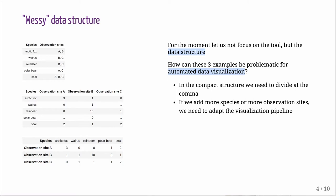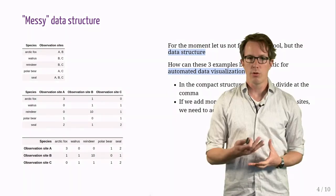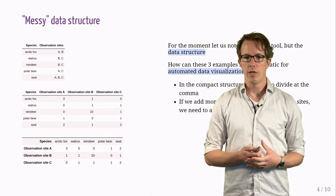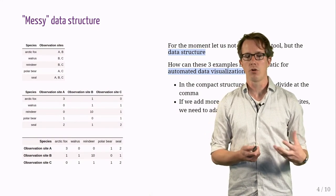Why is this data structure messy? How can these three examples be problematic for automated data visualization? In the compact representation, we would have to somehow divide at the comma.